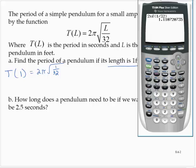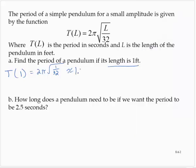2π times the square root of 1.11. So a 1 foot pendulum will have a period of about 1.11 seconds.